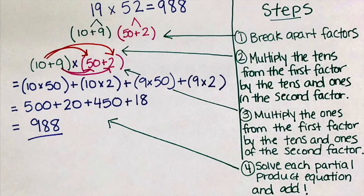And here you see a list of the steps that we just took. Break apart the factors. You multiply the tens from the first factor by the tens in the second factor. That is when we did 10 times 50. Then you take the tens times the ones in the second factor. That would be when we did 10 times 2.